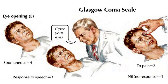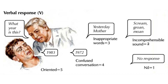Now let's learn how to assess verbal response. We ask the patient a question — for example, 'Hello Mr. X, what year is it?' If the patient gives the correct answer, we consider the patient oriented and give 5 points. If the patient shows confused conversation, 4 points are given. If the patient answers in random inappropriate words, we give 3 points. If the patient only screams, groans, or moans — considered incomprehensible sounds — 2 points are given. If there is no response, 1 point is given.